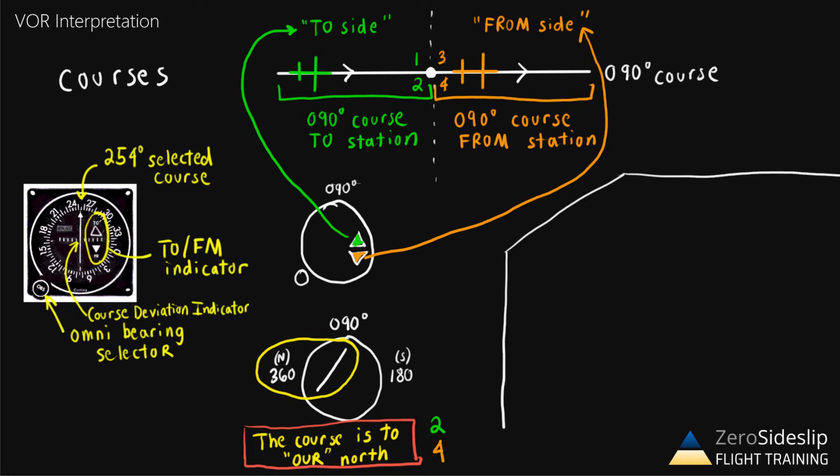Let's put this all together in one final example. Let's say in this VOR indicator, we've selected the 200 course. The numbers that would be on the left and right sides of the VOR indicator, and by the way, in a real situation obviously you'll be able to just look at the VOR indicator and see this, same thing goes for your written exam. But in this scenario, it's going to be 110 on the left side, and 290 on the right side.